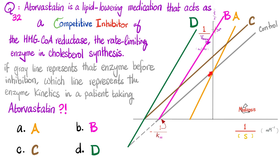A is competitive because it did not change Vmax but raised Km, lowering affinity. B is non-competitive: it lowered Vmax (intersection goes up on vertical axis) but did not change affinity or Km. C is the uncompetitive inhibitor — parallel and above the control because Vmax decreased; it also lowered Km (shifted left), so affinity went up. D is the mixed inhibitor: extending the line shows Vmax went down, and Km may increase or decrease depending on conditions.